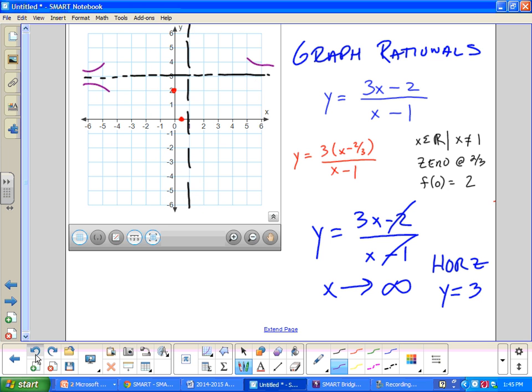Alright, so we're to the point now. Step one, factor. Step two, domain, zeros, y-intercepts. Step three, figure out the horizontal asymptote. Step four, the big sign table. Alright, we're going to make a sign table of all this. So I'm going to do that in red.